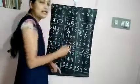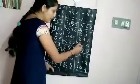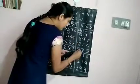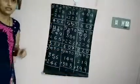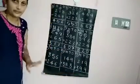Now add the hundreds. 1 plus 5 is 6, 6 plus 2 is 8. The answer is 820.